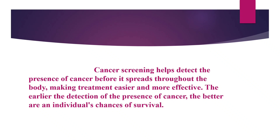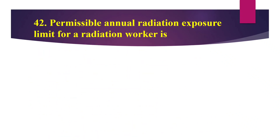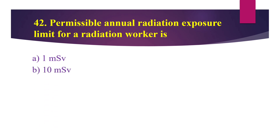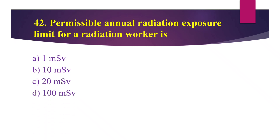Question number 42: Permissible annual radiation exposure limit for a radiation worker is — Option A: 1 mSv, Option B: 10 mSv, Option C: 20 mSv, Option D: 100 mSv. The answer is Option C — 20 mSv.